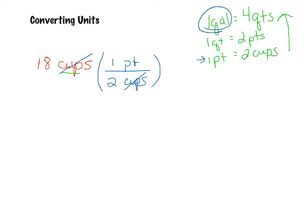Okay, so basically what I have here is what I have in the numerator should equal what I have in the denominator. This is basically one ratio, in the sense that one pint is the same thing as two cups. They are equivalent. So what I'm doing is basically multiplying by a value of one, because the numerator is equivalent to the denominator.